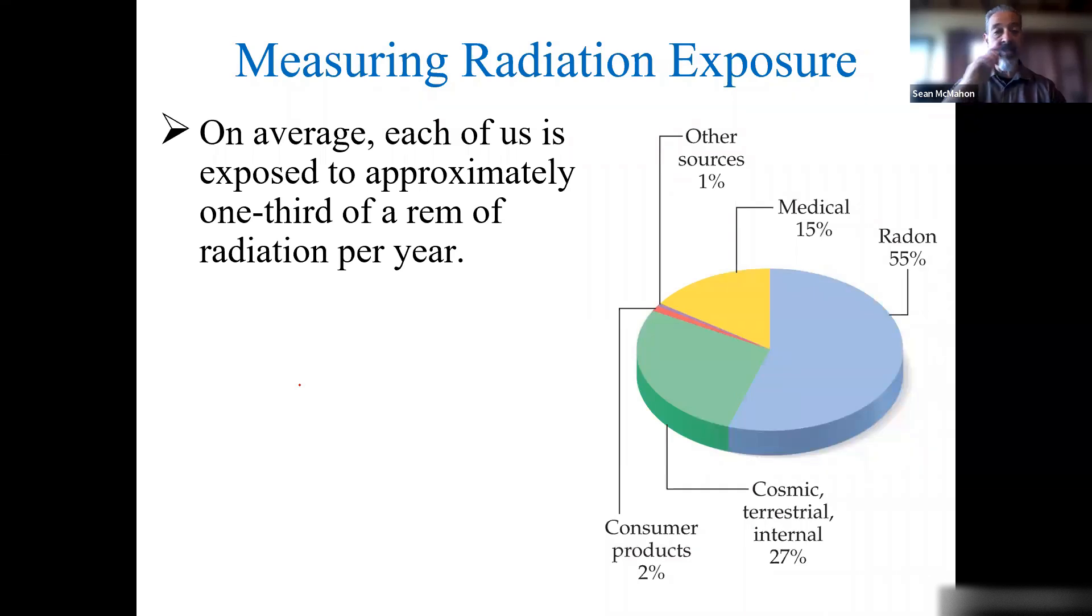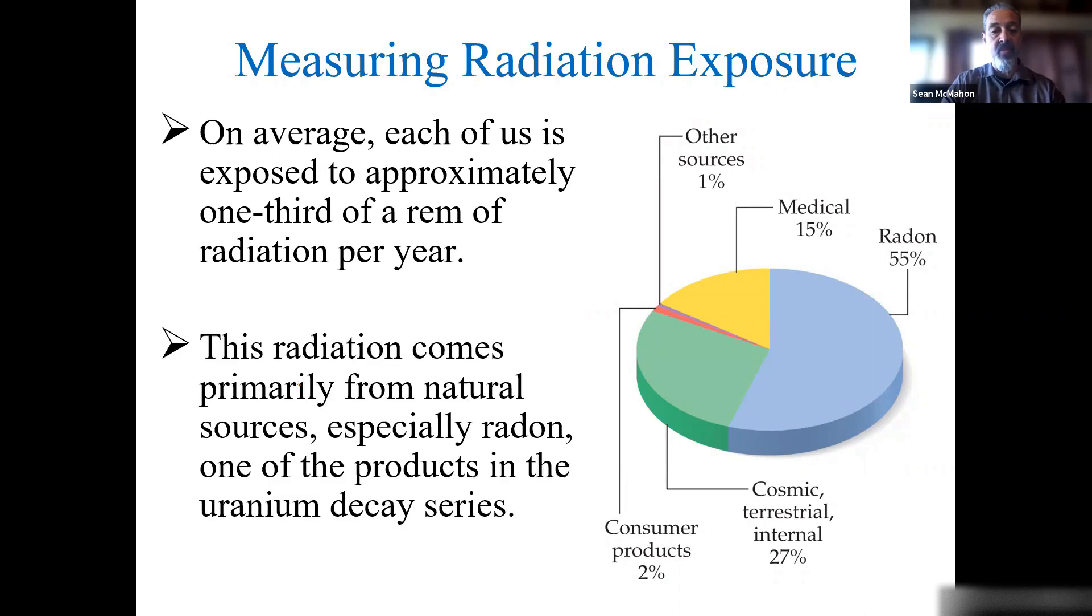On average, each of us is exposed to about a third of a REM of radiation per year, which is not a lot. We get it from different sources. It comes primarily from natural sources like radon, which is one of the products in the uranium decay series. I don't go over the uranium decay series with fission and fusion, just because we're short on time this semester. But you would see radon in those cascades of decay.